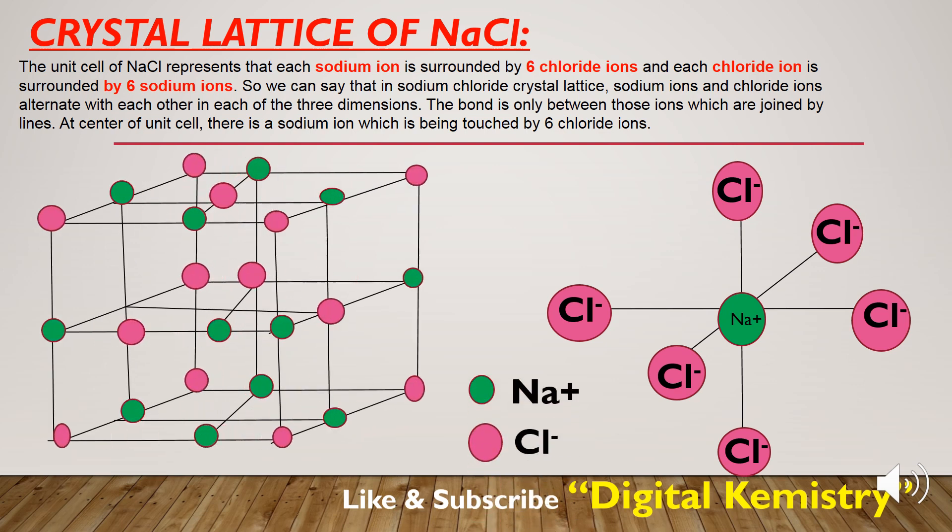Here the small green balls represent the sodium ions and the big pink balls represent the chloride ions. We can say that in the sodium chloride crystal lattice, the sodium ions and the chloride ions alternate with each other in each of the three dimensions.